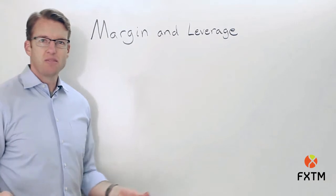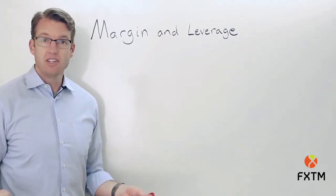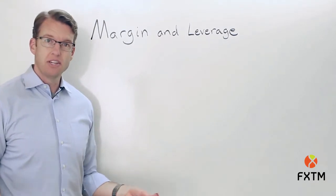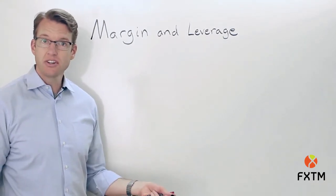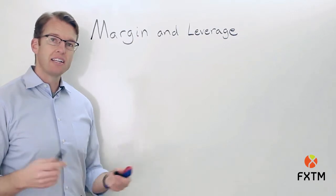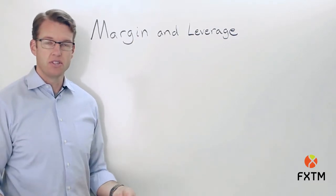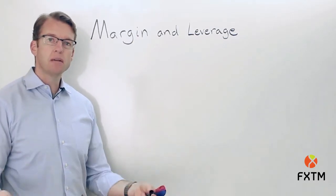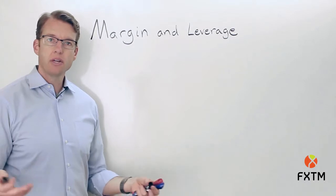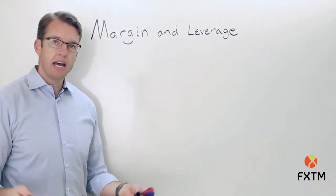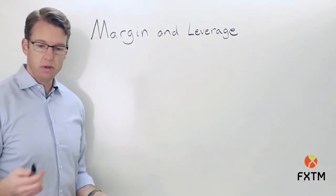Margin is basically a good faith deposit that you have available in your account — equity in your account, cash in your account — against potential losses when you're holding a position. So what is the minimum required amount of equity or cash that I need to have in my account in order to hold open a position?